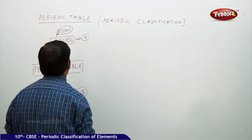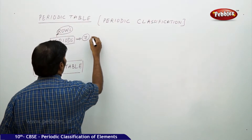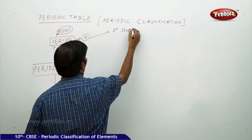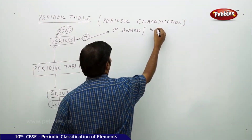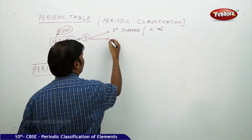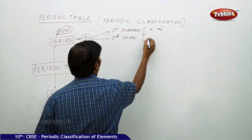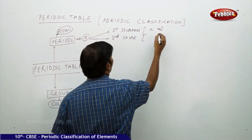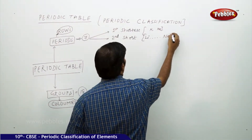In these 7 periods, the first period is the shortest, with only two elements: hydrogen and helium. The second period is a short period, which has eight elements, starting with lithium and ending with neon.